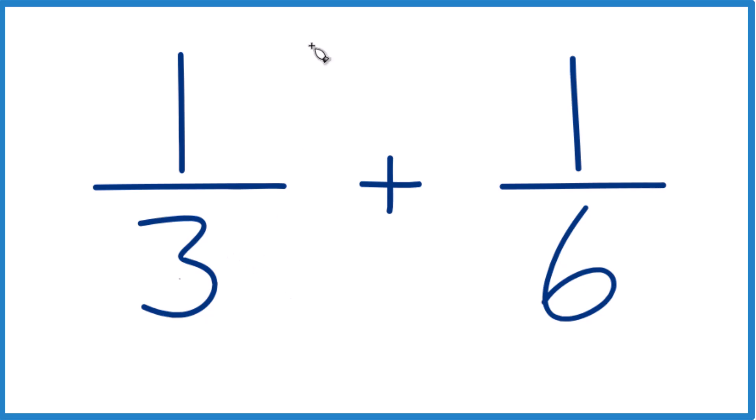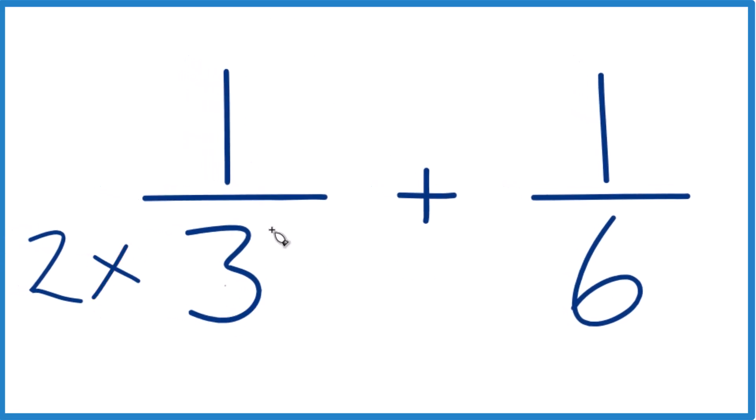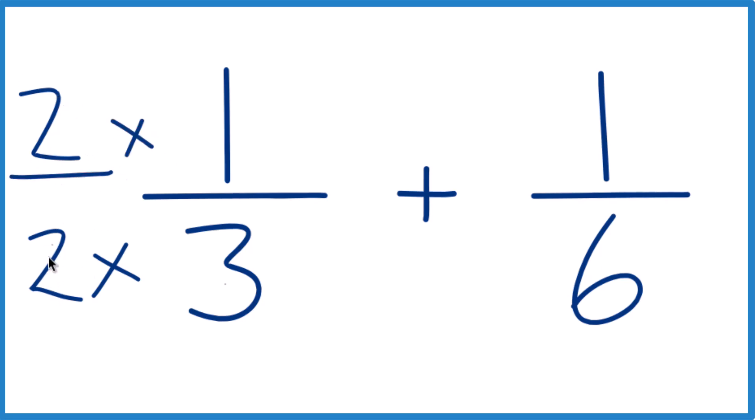So why don't we do this? Why don't we take 2 times 3? Because that would give us 6, then we'd have the same denominator. But we can't just multiply the denominator here by 2, we do need to multiply the numerator by 2. That's because 2 over 2, that's just 1. So we're not really changing the value, just the way that it's represented.